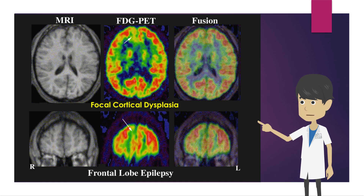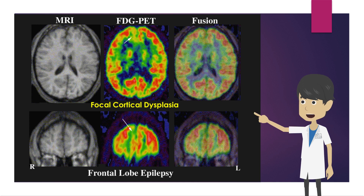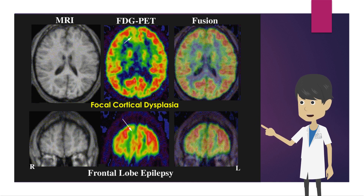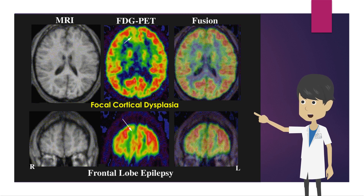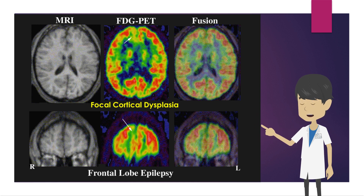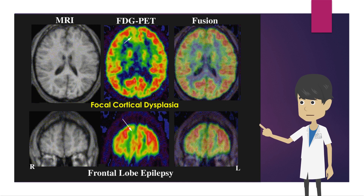This is a case of laughter attack. No obvious abnormality was seen on MRI. The PET scan of glucose metabolism showed a decreased area in the right medial frontal lobe, and the seizures resolved after focus resection. Pathology showed focal cortical dysplasia, and glucose metabolism PET is useful in cases where MRI does not show any findings.